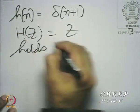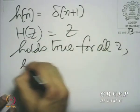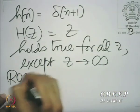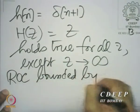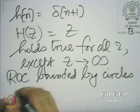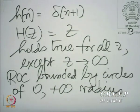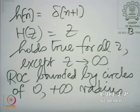The z transform z holds true for all z except z tending to infinity. So the ROC is again bounded by circles with 0 and plus infinity radius. Here, we have all of the z plane — the boundary z = 0 or r = 0 is included in the region of convergence, but the circle with infinite radius is not included.